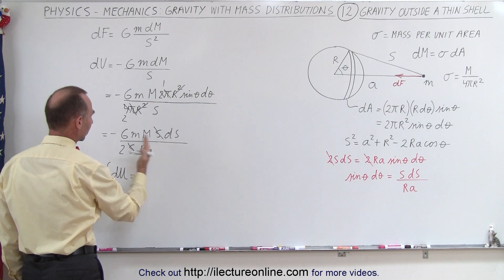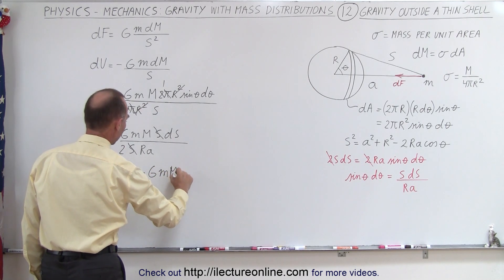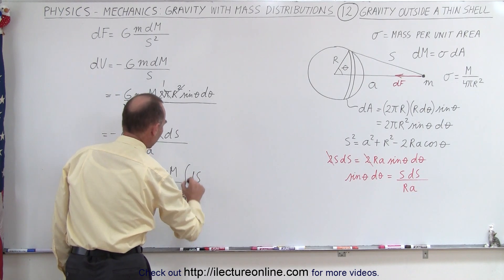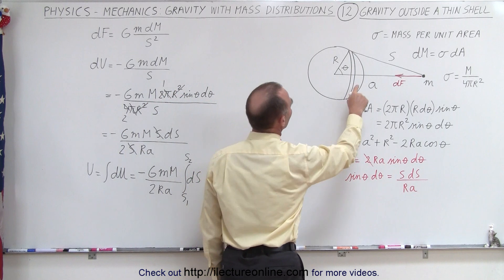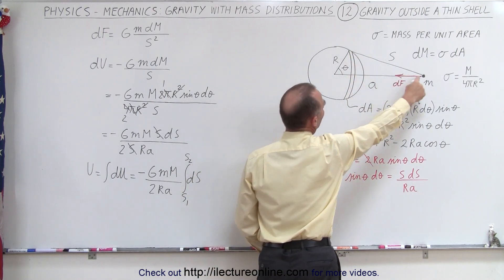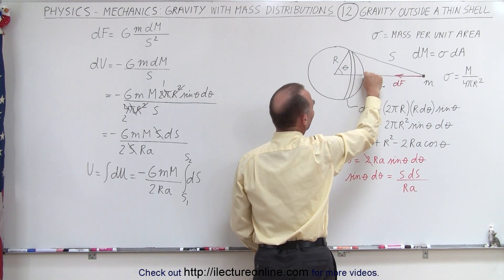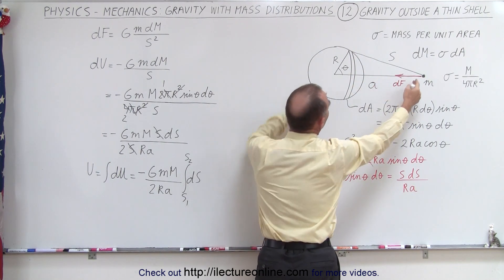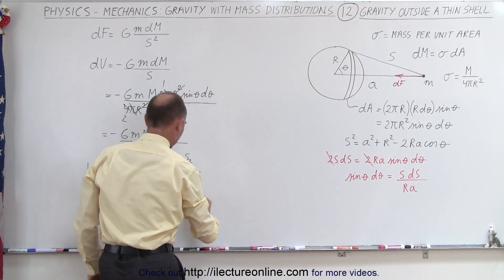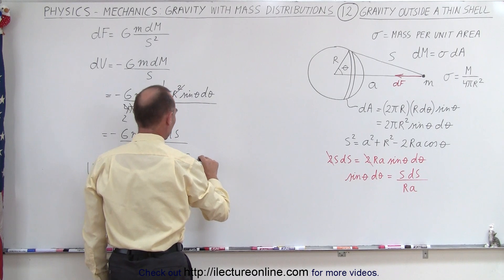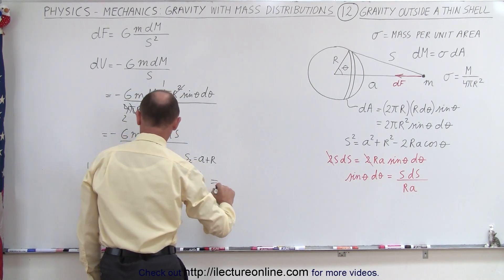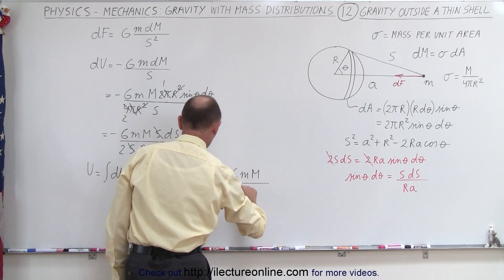Integrating to get U, we pull all constants out: U = −G·m·M / (2ra) times the integral of ds from s₁ to s₂. The lower limit s₁ is the smallest s, which occurs at the near edge of the shell: s₁ = a − r. The upper limit s₂ is the far edge: s₂ = a + r.